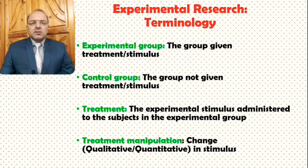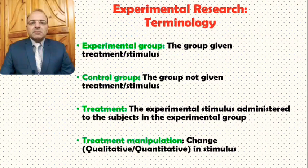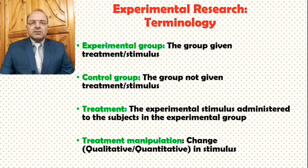Then what is the treatment? The treatment is the experimental stimulus administered to the subjects in the experimental group. For example, if you divide a class into two groups — one experimental group and the other control group — and you teach the control group through the traditional method while the experimental group is taught through a new method whose effectiveness you want to establish, that new method of teaching used with the experimental group will be called treatment.